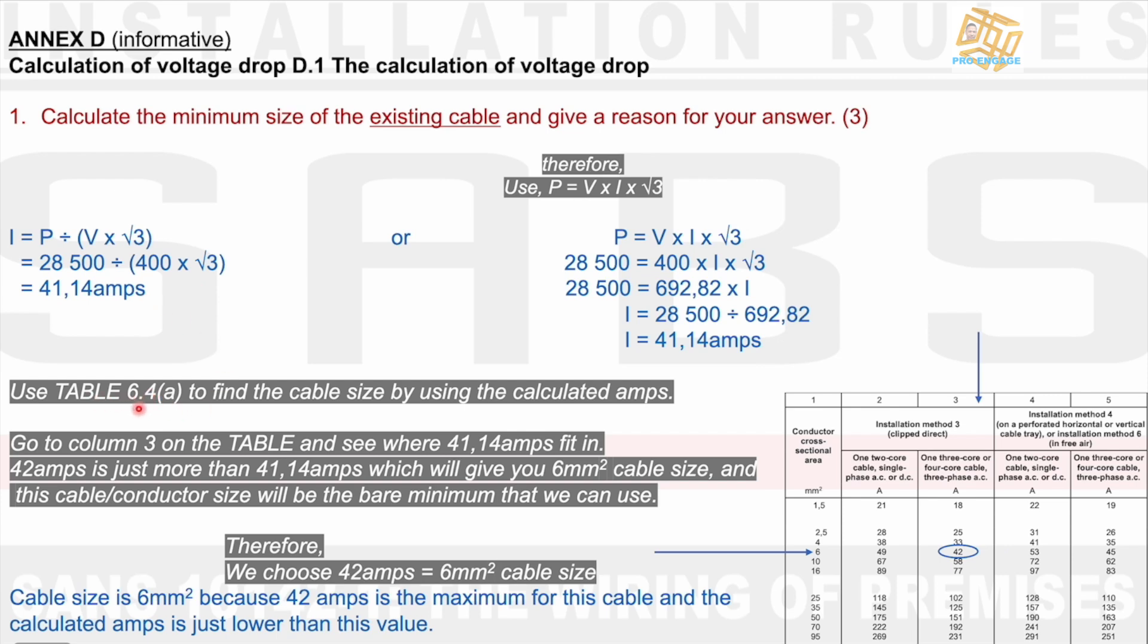I said use table 6.4a to find the cable size by using the calculated amps. I've got this amps here. I go to column 3 over here for 3 phase. I then line up where my amps is. So see where 41.14 amps fit in. I say 42 amps is just more than 41.14 amps, which will give you 6mm² cable size. And this cable conductor size will be the bare minimum that we can use. Therefore we choose 42 amps according to the table and we line up the cable size according to that amps. And we say the cable size would be 6mm² cable.